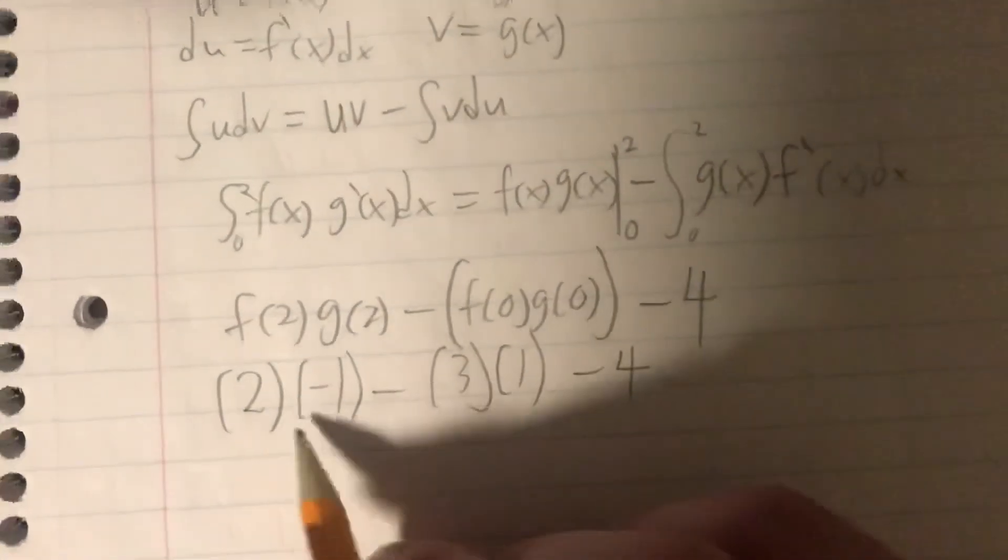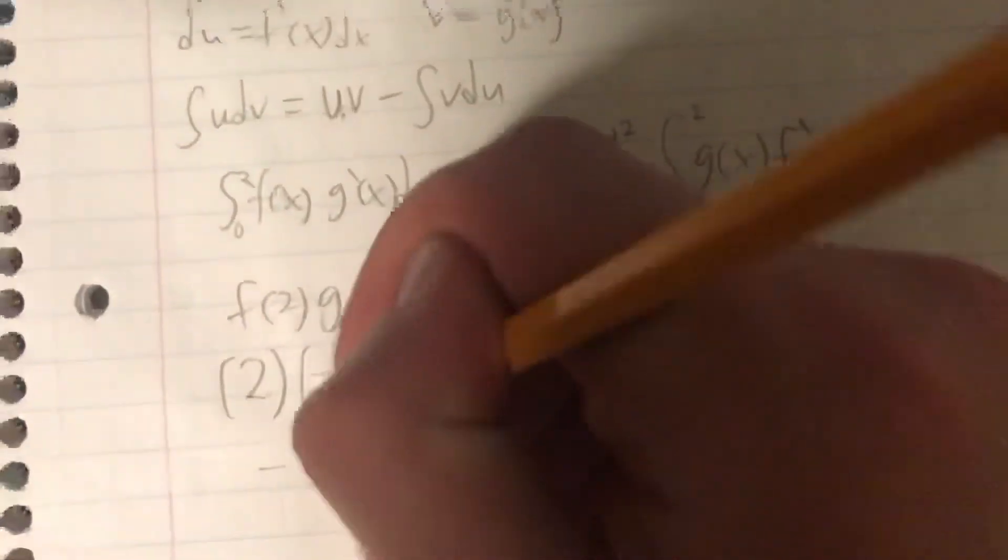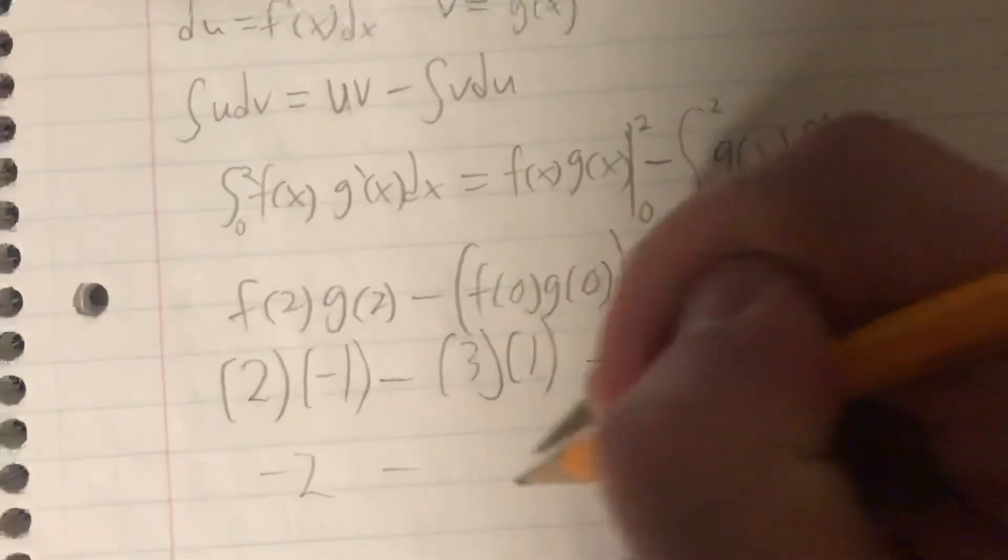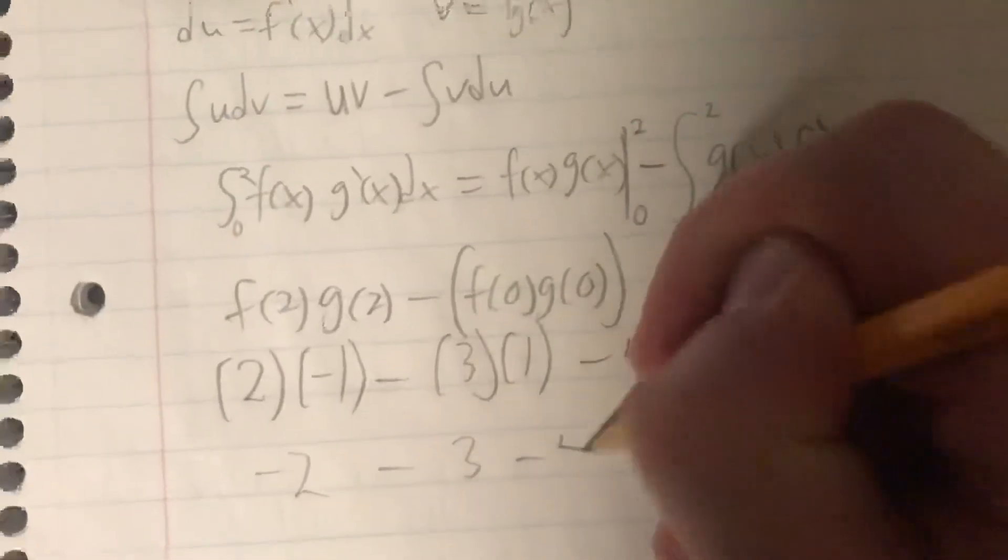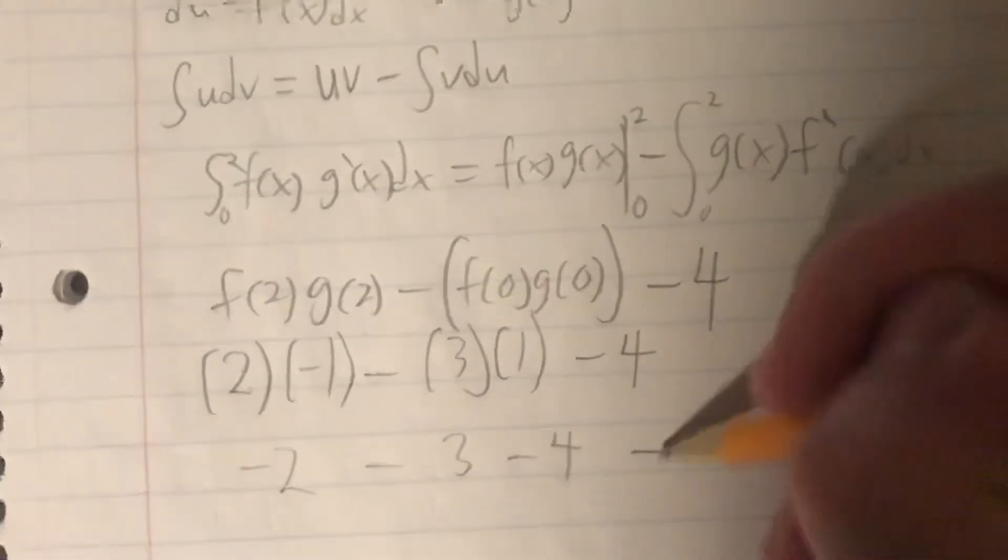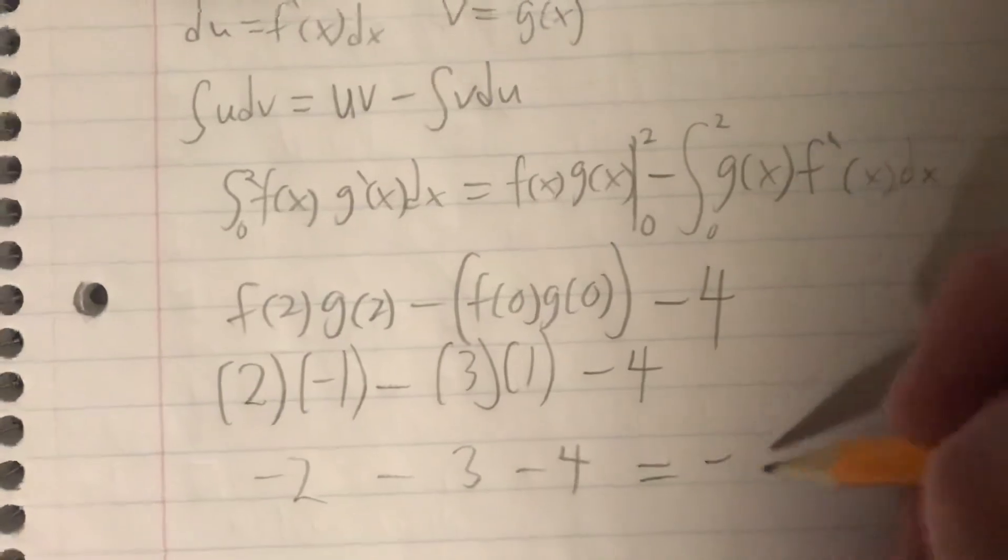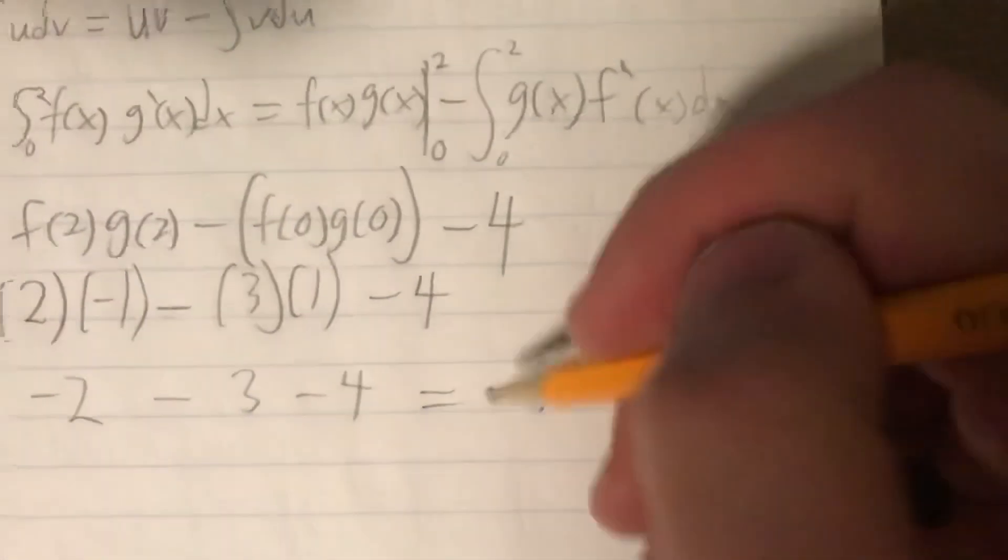So, then, 2 times negative 1 is going to be negative 2, minus 3 times 1 is 3, minus 4, and this whole thing is just going to be equal to negative 9. So, that will be the value of the integral.